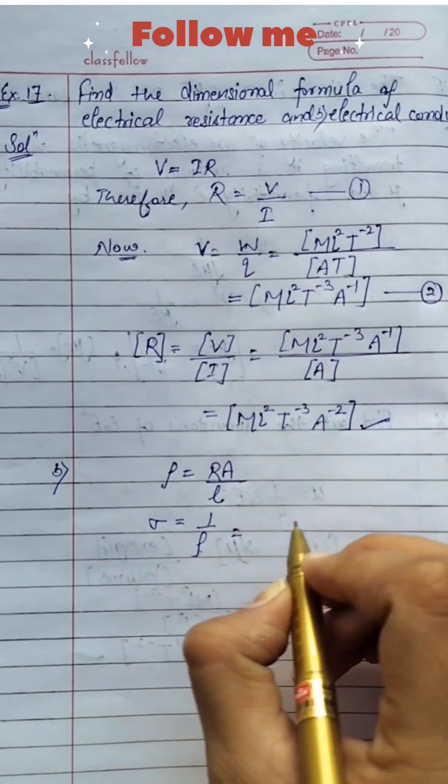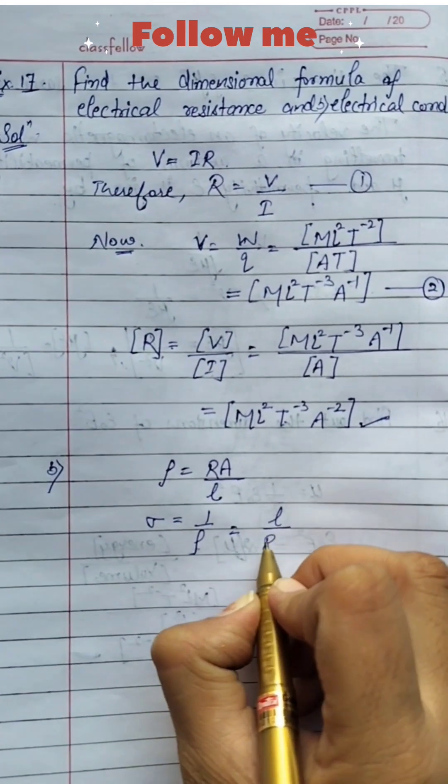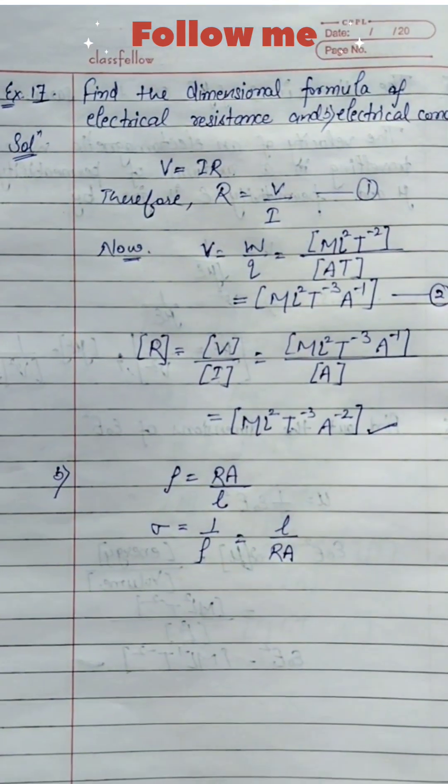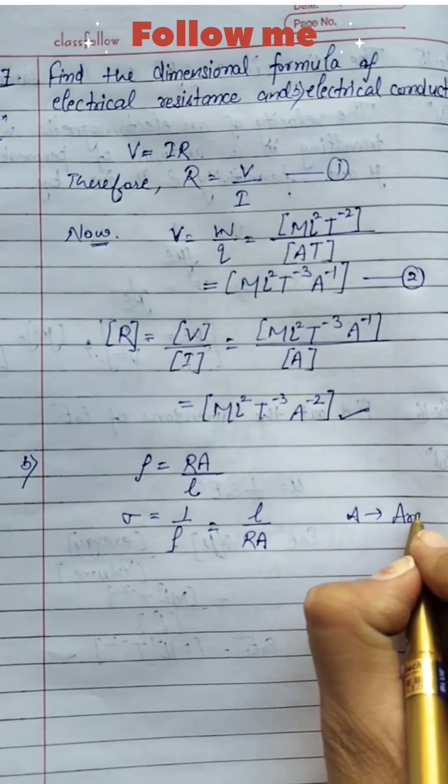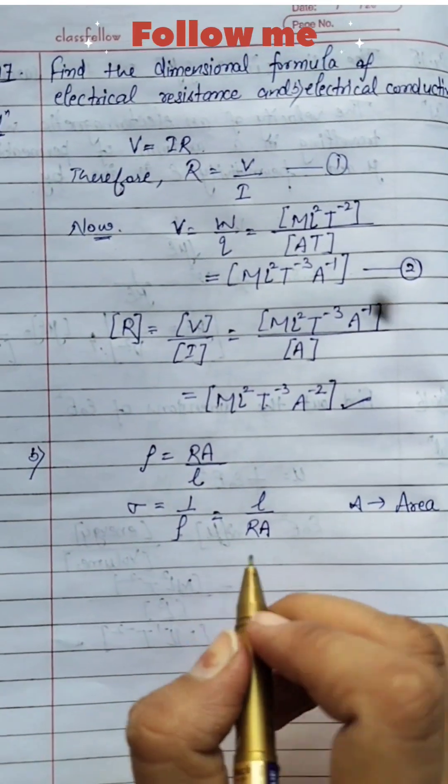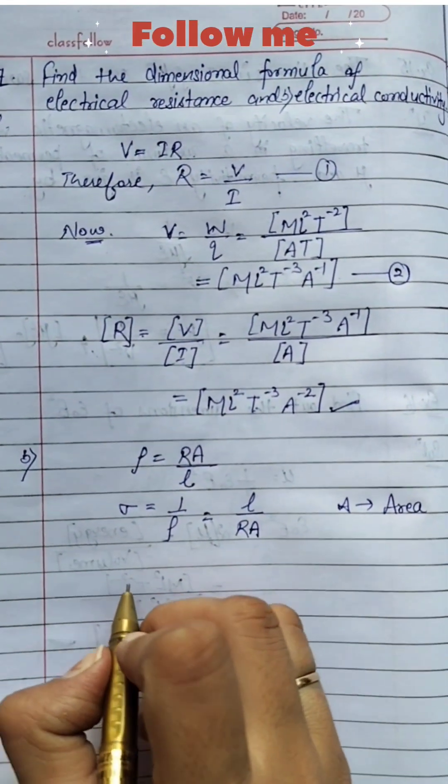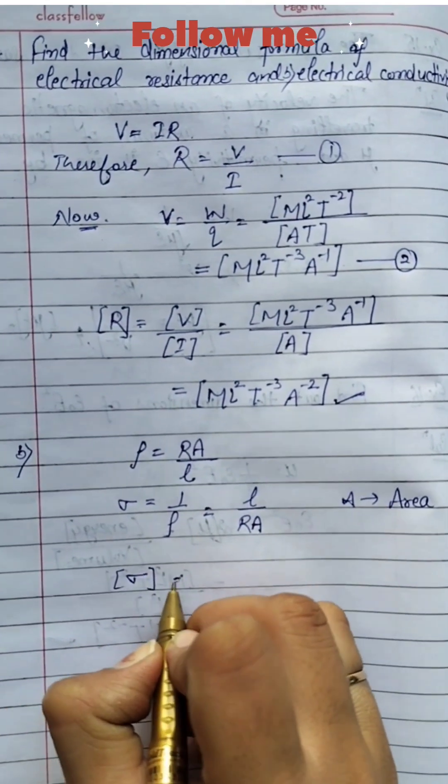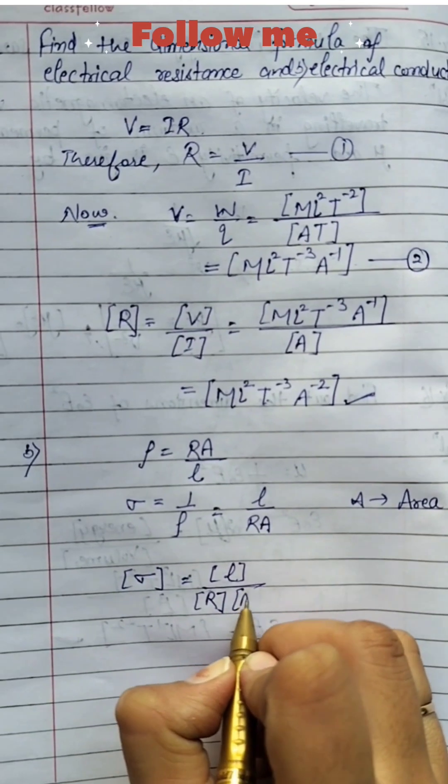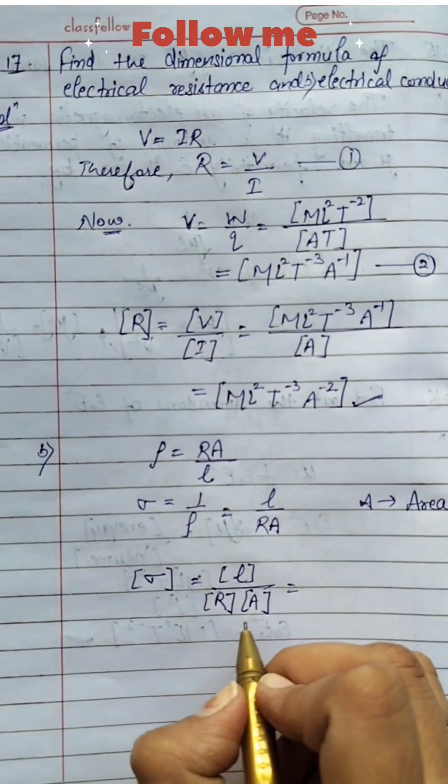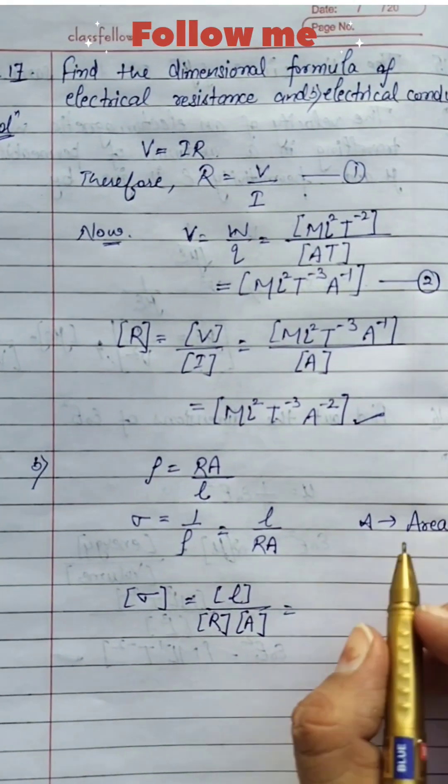So this implies we can write it as L upon R into A, where A is the area. Sigma equals L upon R into A. Area is also in length form, that is L².